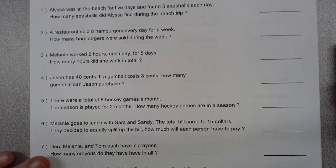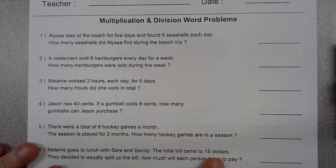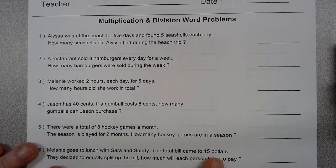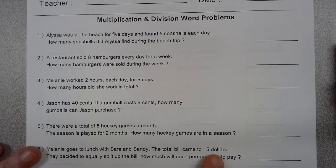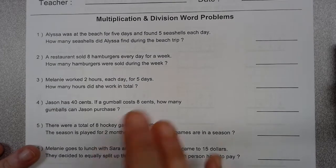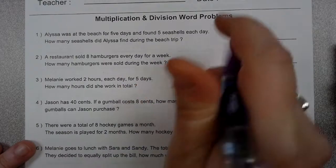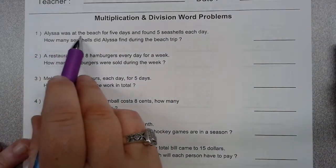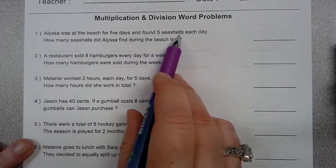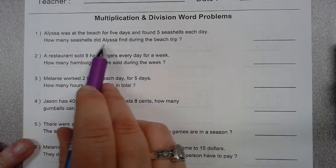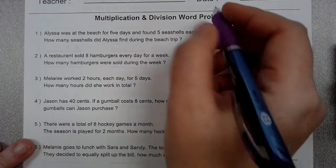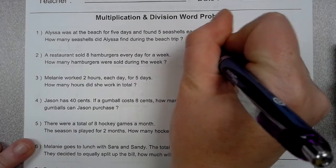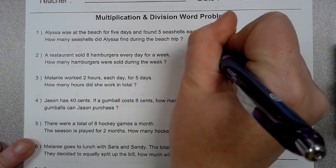So with your word problems, you should have enough room over here. Like, Alyssa was at the beach for five days and found five seashells each day. How many seashells did Alyssa find on her beach trip? So she was at the beach for five days and she found five shells each day.